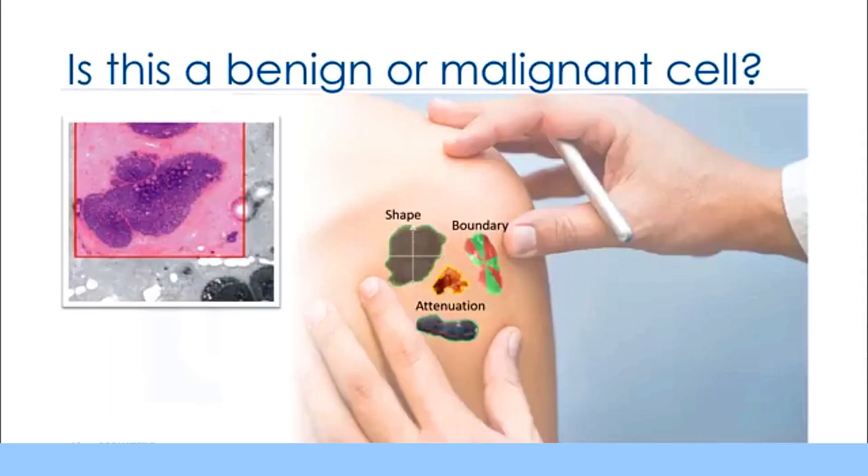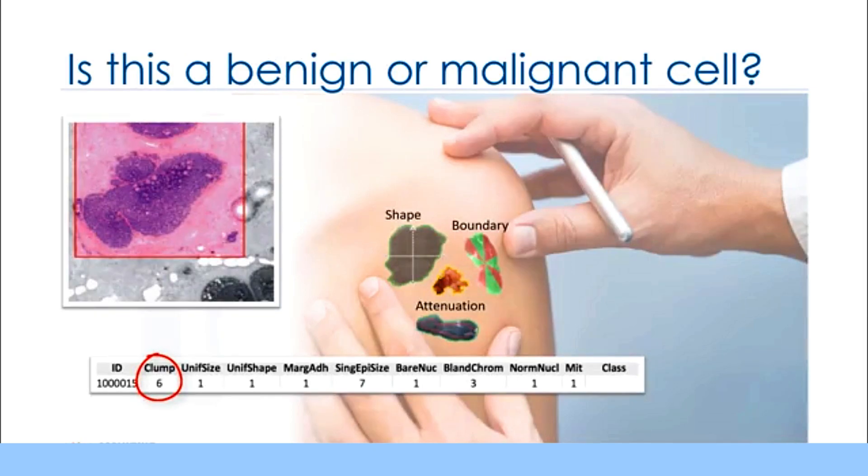This is a human cell sample extracted from a patient and this cell has characteristics. For example, its clump thickness is 6, its uniformity of cell size is 1, its marginal adhesion is 1, and so on. One of the interesting questions we can ask at this point is, is this a benign or malignant cell?